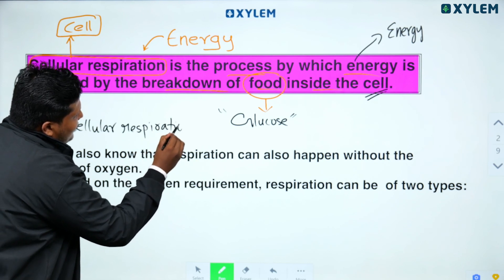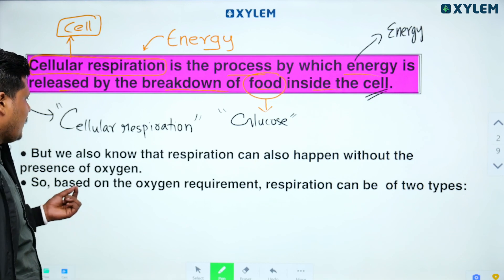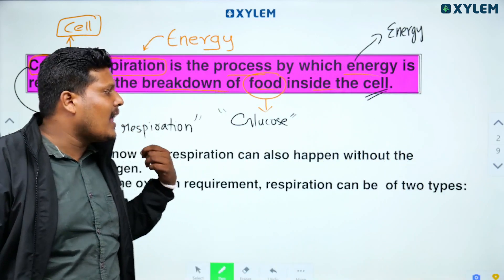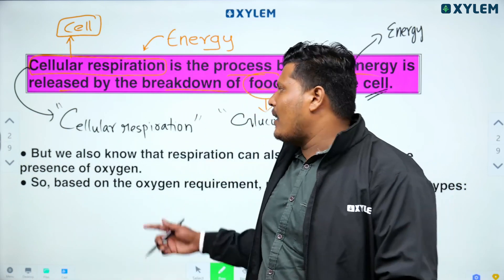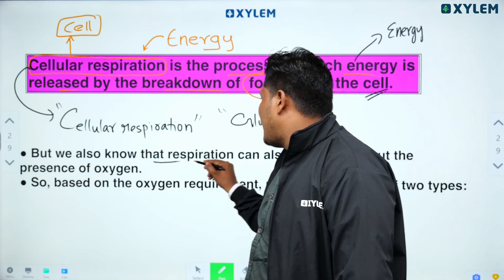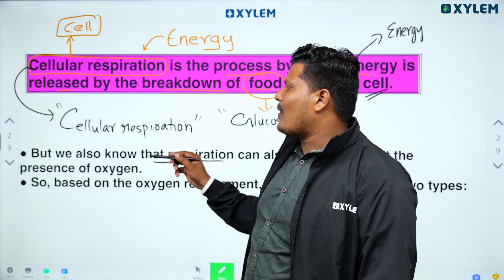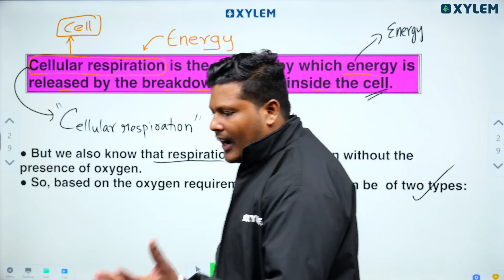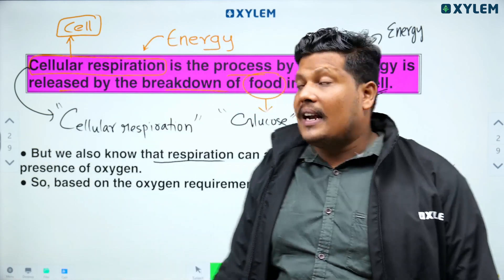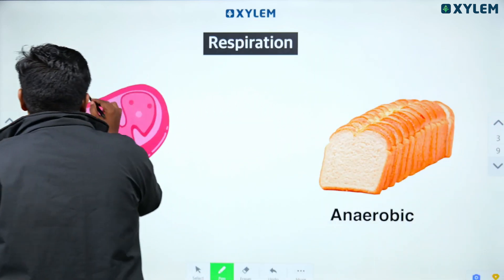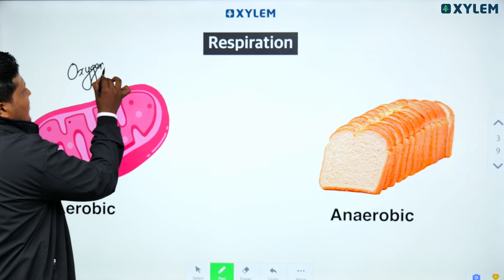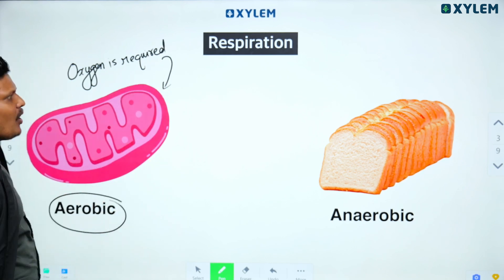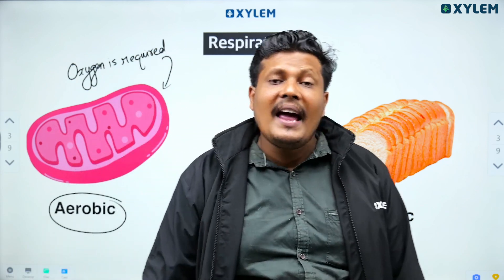In cellular respiration, oxygen may or may not be required. Respiration can happen with or without oxygen. There are two types of respiration: aerobic respiration, where oxygen is required, and anaerobic respiration, where oxygen is not required.